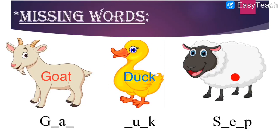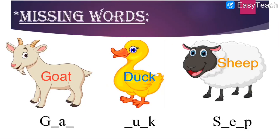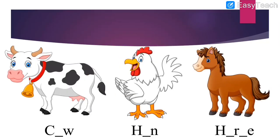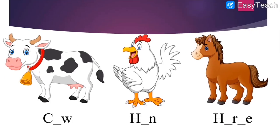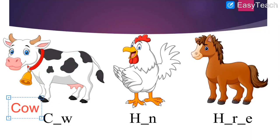Next exercise with new animal names. Identify this animal — C-W. One, two, three — it is a C-O-W, cow. It gives us milk. Next: it starts with H and ends with N, it gives us eggs. One, two, three — this is H-E-N, hen. Last: it helps us carry load from one place to another, starts with H. One, two, three — this is a horse. H-O-R-S-E, horse.